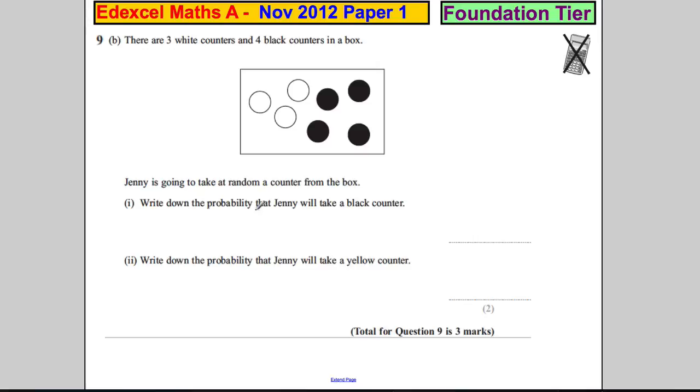Part B. There are three white counters and four black counters in a box. Jenny is going to take a random counter from the box. Write the probability that Jenny will take a black one. Well, there's one, two, three, four black ones out of a possible seven counters to take. So it's four sevenths.